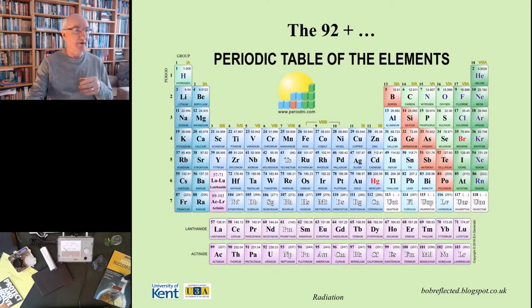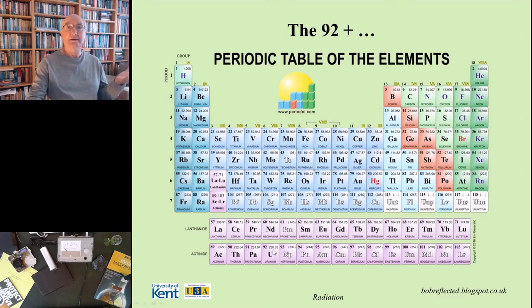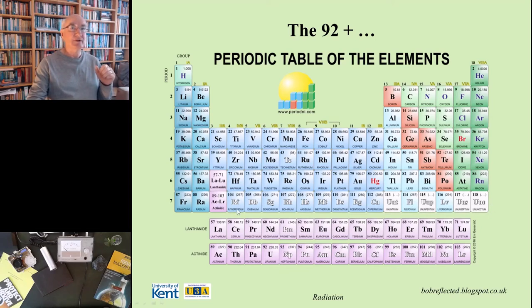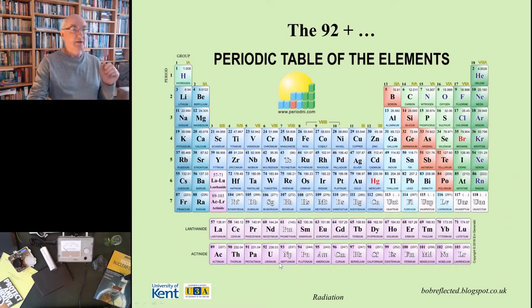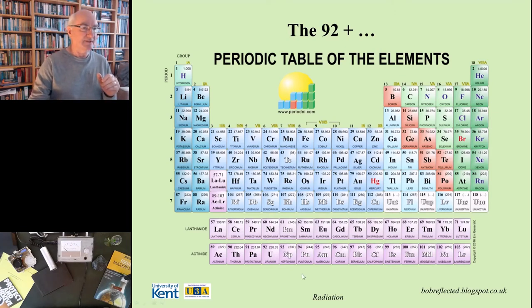If we take a look at our periodic table, we go all the way through to number 92 — uranium — the end of our list of naturally occurring elements. Everything beyond 92, and some others up here as well, are all artificially made and all extremely unstable. And a lot of the naturally occurring elements are radioactive as well — uranium is a classic example. I think probably everyone knows that uranium is radioactive.